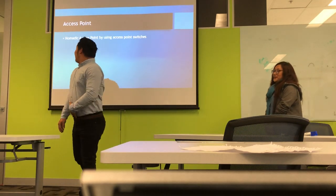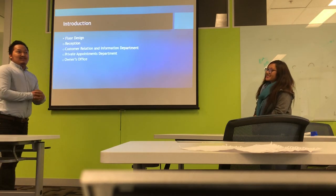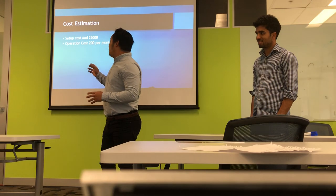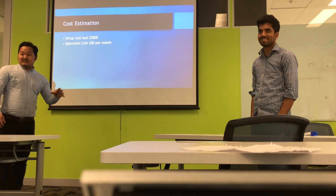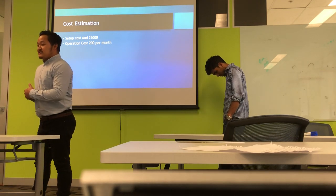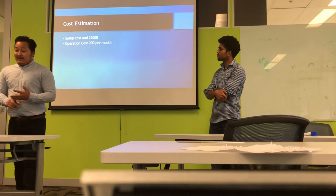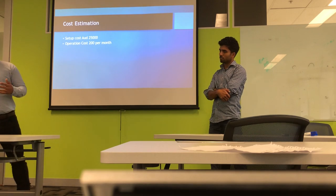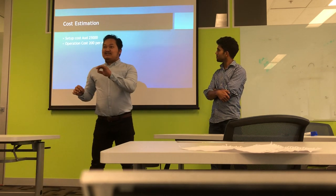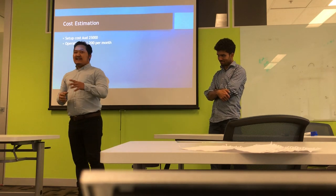My screen ID is 37687. Today in this presentation, I'm going to clarify the cost estimation for our digital education and visa services. As my previous colleague explained, our total setup cost is $25,000 and the operation cost is $200 per month. The key devices for this project include routers, switches, a wireless router, access points, personal computers, printers, iPhones, a Cisco firewall, tablets, and smartphones.